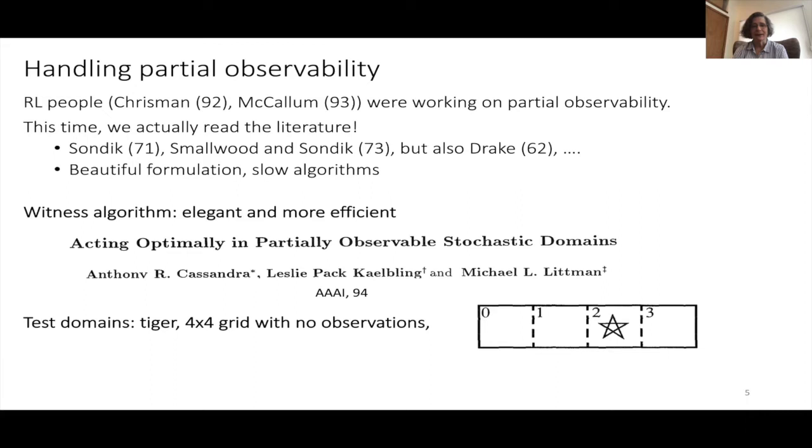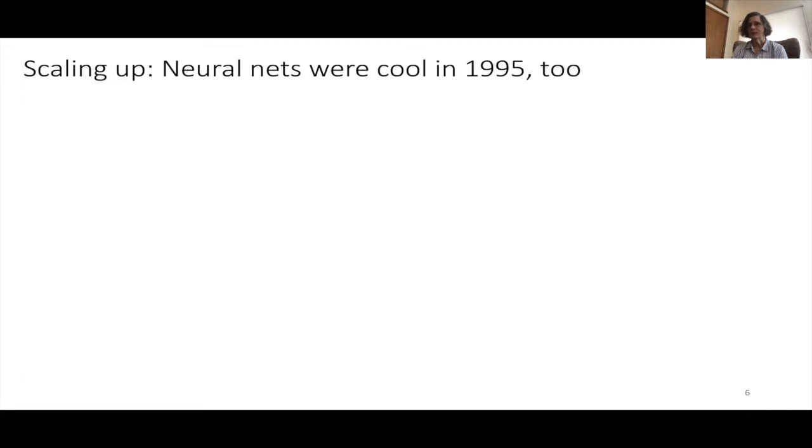Together we wrote this paper in AAAI 94 that mostly introduced the POMDP formulation that was existing in the OR literature and added this algorithm called the WITNESS algorithm. We ran it on actual application domains, but there was this problem called the TIGER problem that had two states and two observations. We tried it on a four-by-four grid. Those were somewhat difficult for the algorithm to solve at the time. We had a great formulation but something that wasn't so practical.